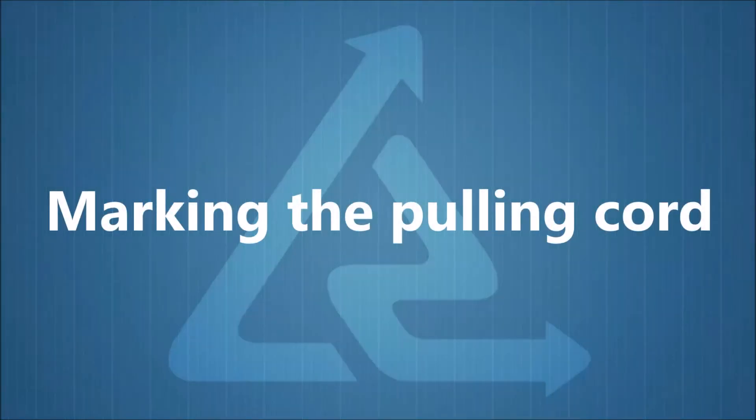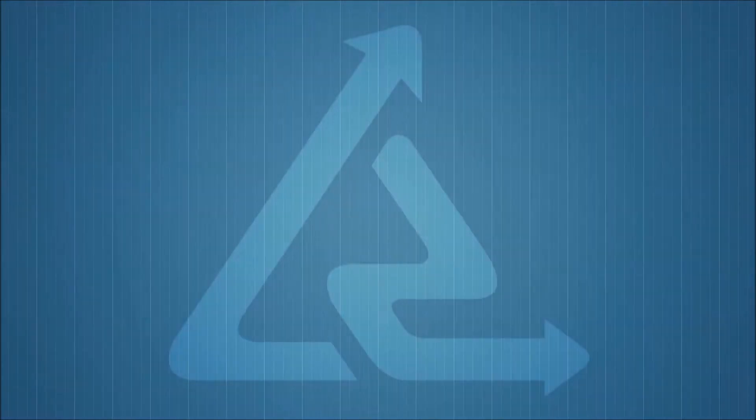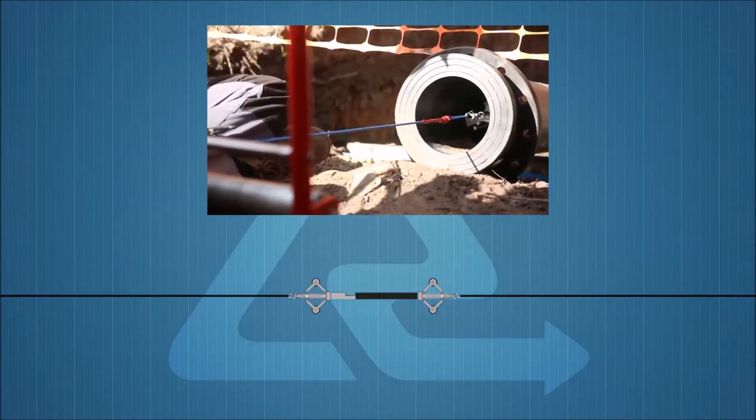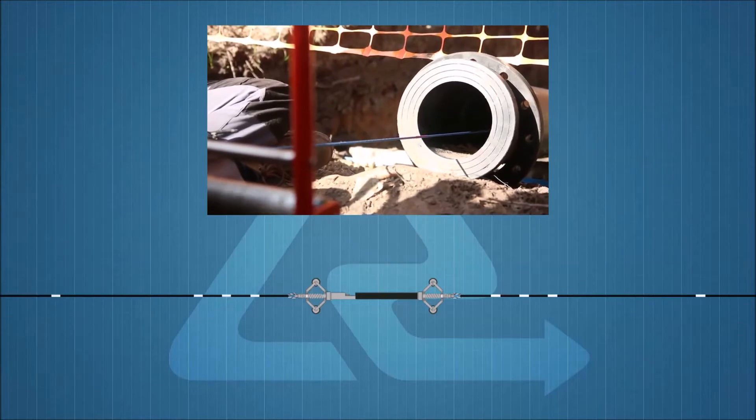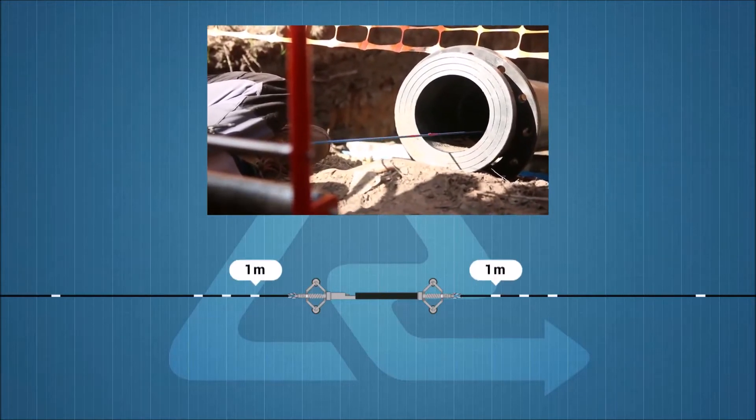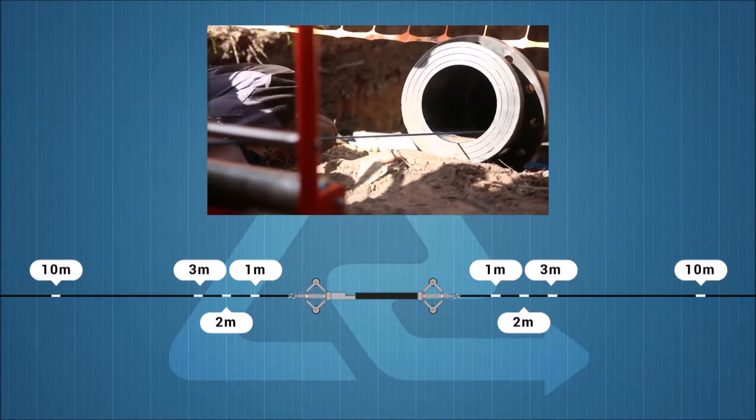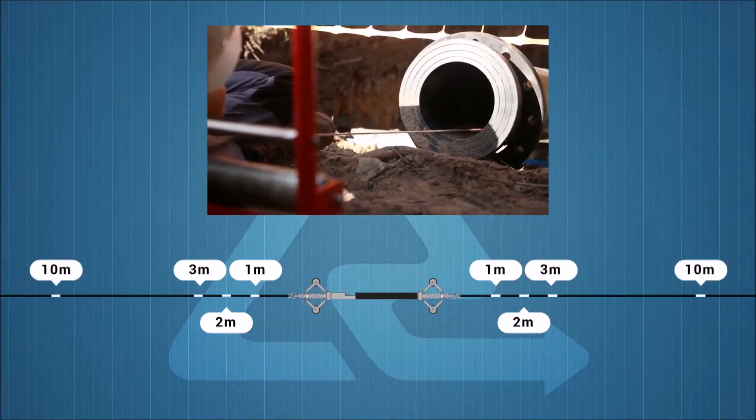The probe must come to a halt exactly in line with the end of the pipe, which is typically where the reference coordinate is taken. To forewarn the field operators that the probe is nearing, it is recommended to mark the end of the pipe. In addition, a marking at approximately 10 meters is recommended.